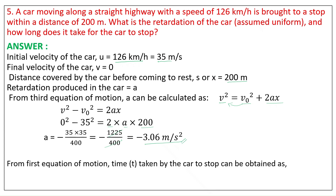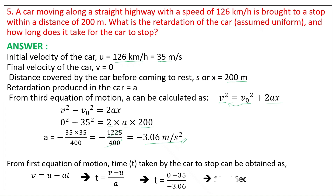From the first equation of motion, time T taken by the car to stop is obtained as V equals U plus AT. Therefore T equals V minus U by A. We get T equals 0 minus 35, by minus 3.06. Therefore time T equals 11.44 seconds.